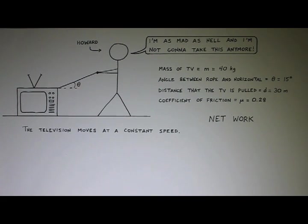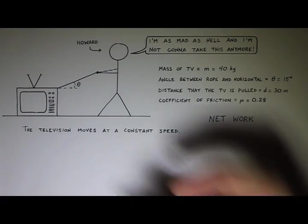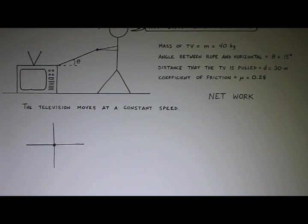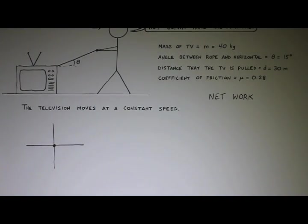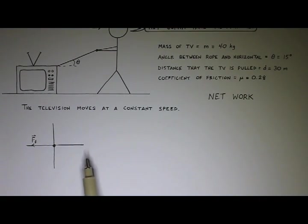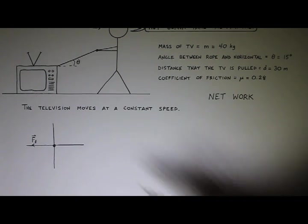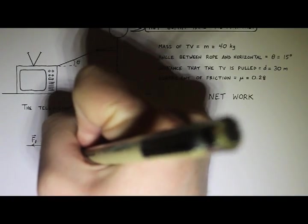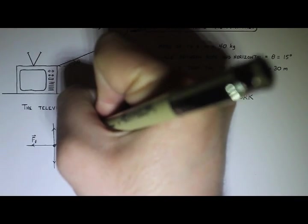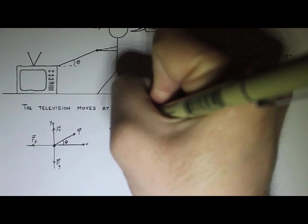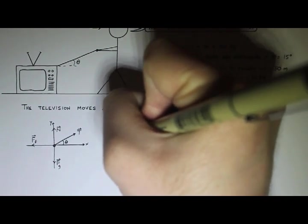Before I do that, I should probably draw a free body diagram and look at some of the forces in the X and some of the forces in the Y. So a little dot in the center — that'll be my TV. What forces are acting on the television? I have a friction force opposing the motion: if the TV is moving to the right, my friction force will be to the left. I have a normal force N, the weight of the television F sub G, and then there's the tension force at angle theta. This is my X axis and this is my Y axis.